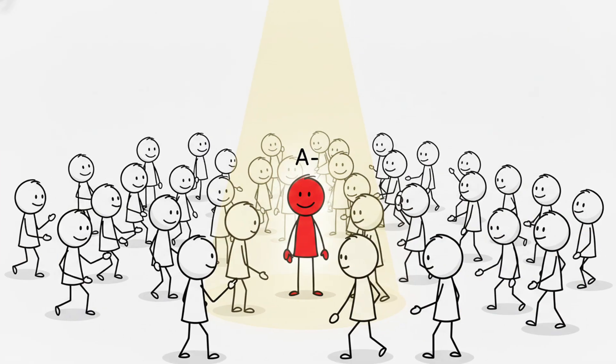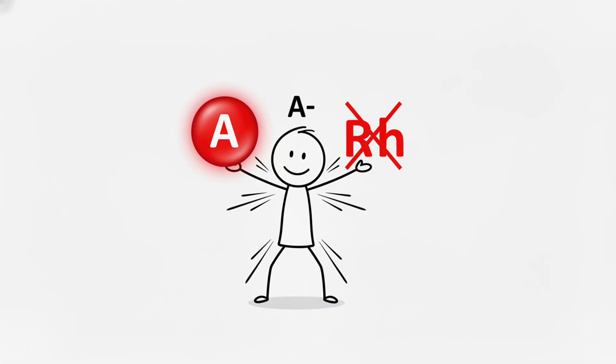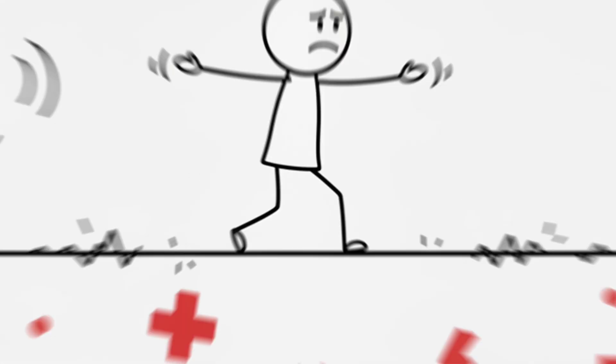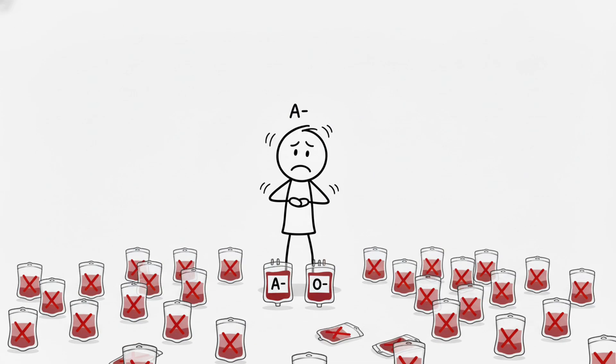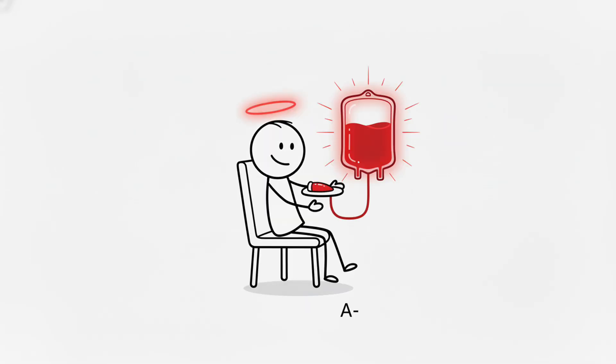A negative. A negative is one of the rarest types. Less than 2% of the global population. You carry the A antigen but lack the RH factor, creating a dangerous medical tightrope. If you need a transfusion, your options are tiny. Only A negative or O negative donors. Your safety net is razor thin, making every A negative donation incredibly precious.